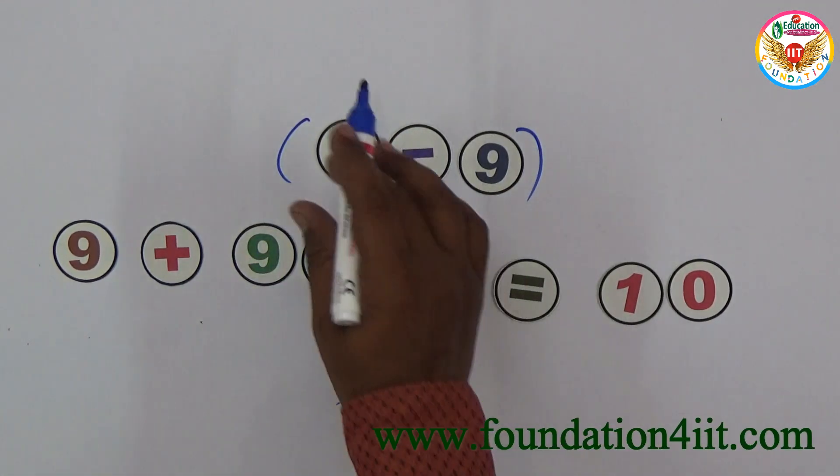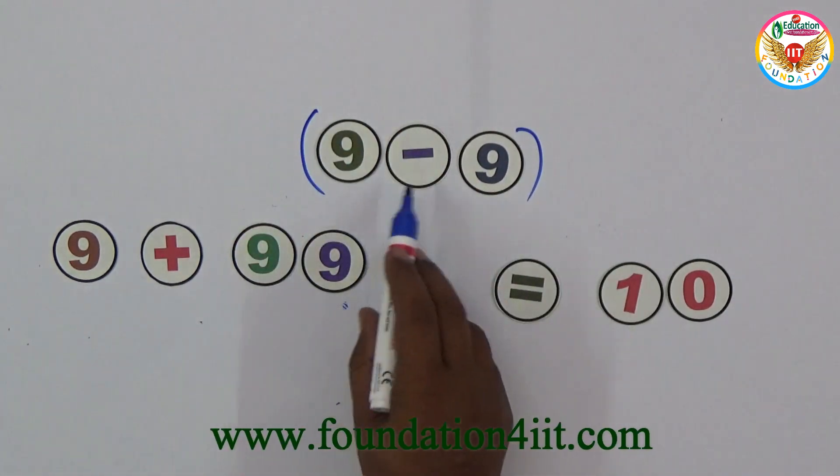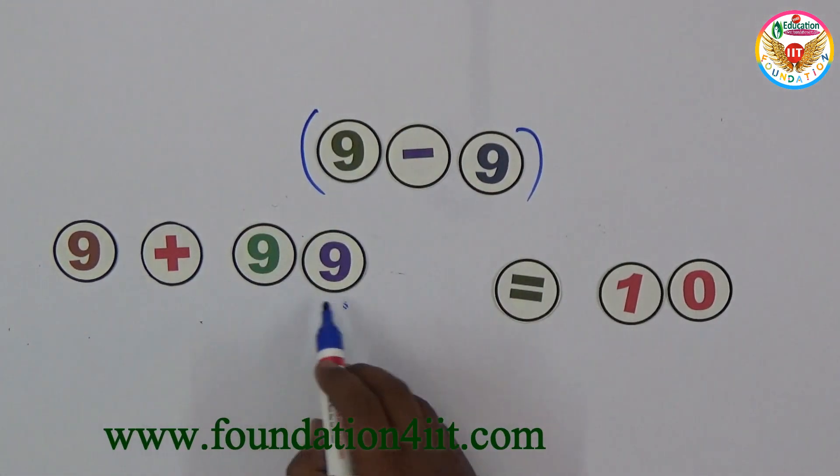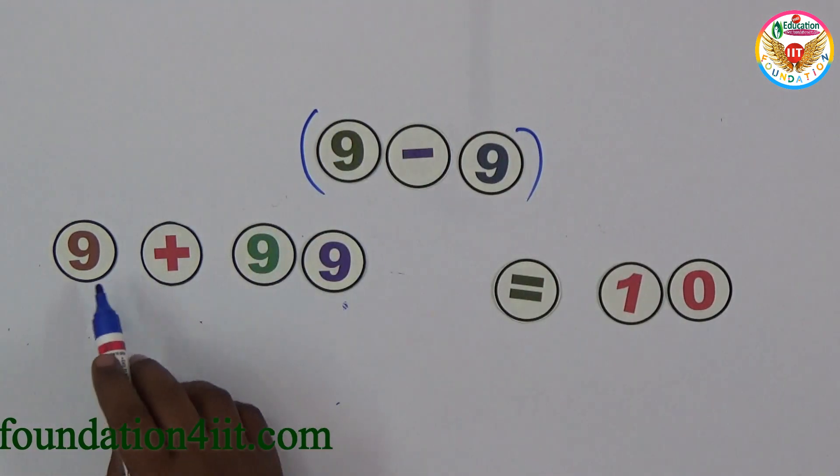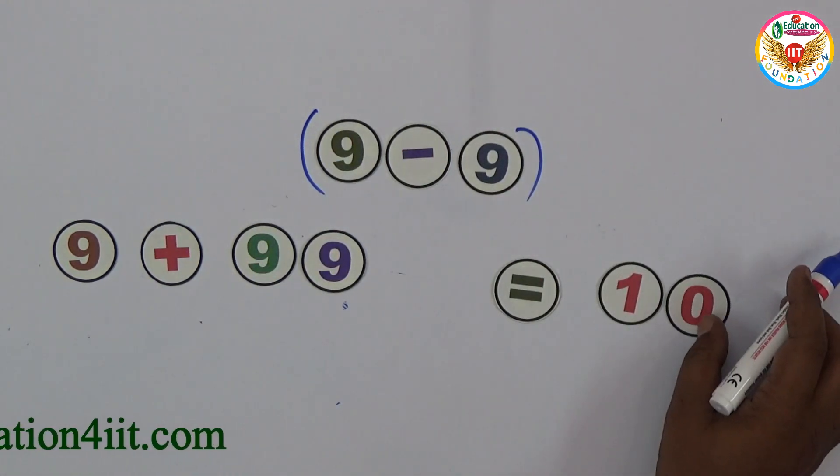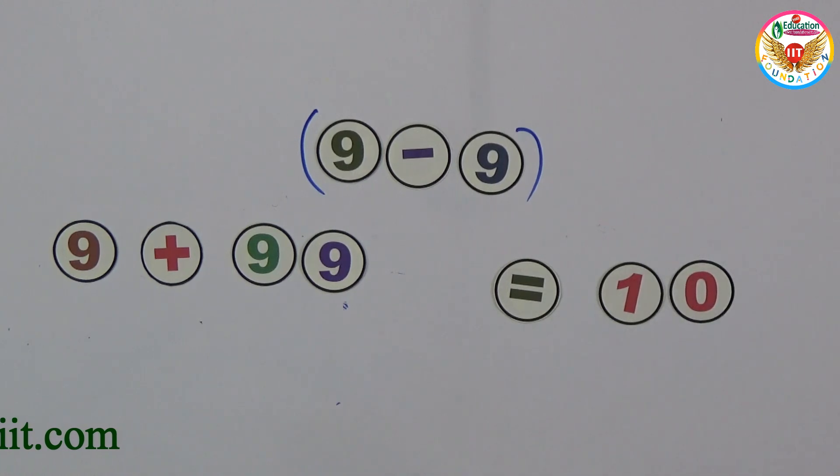So 9 + 99^(9-9). Since 9 - 9 = 0, and 99^0 = 1, this total value is 1 + 9 = 10. This is another solution to obtain 10.